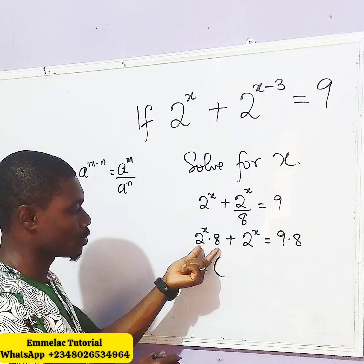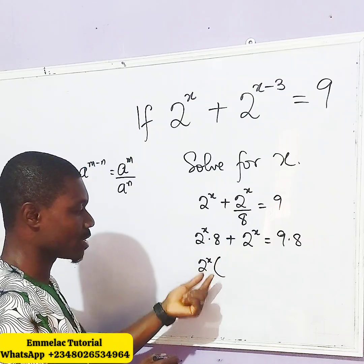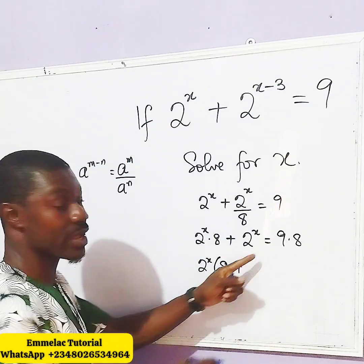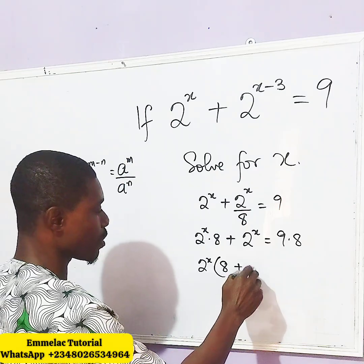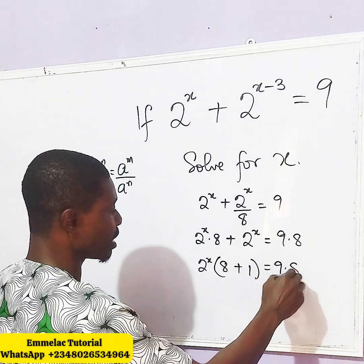Now, 2 raised to x times 8 divided by this, we are left with 8, then plus 2 raised to x divided by 2 raised to x, we are left with 1, then equals 9 times 8.